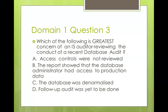Question three: which of the following is the greatest concern of an IS auditor reviewing the conduct of a recent database audit? Options: access controls were not reviewed, the database administrator had access to production data, the database was not normalized, or a follow-up audit was yet to be done. The follow-up audit may simply not be due yet. The database not being normalized means redundant data, which is serious. The DBA having access to production data is not avoidable. The greatest challenge is access controls not being reviewed — who had access, what level, who are the super users, what can they do? So the answer is A.